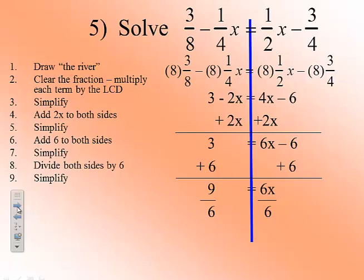And then we can reduce that fraction. So we have x equals 9 over 6, which reduces nicely to 3 halves or, for you decimal lovers, 1.5. Go ahead and do the check.